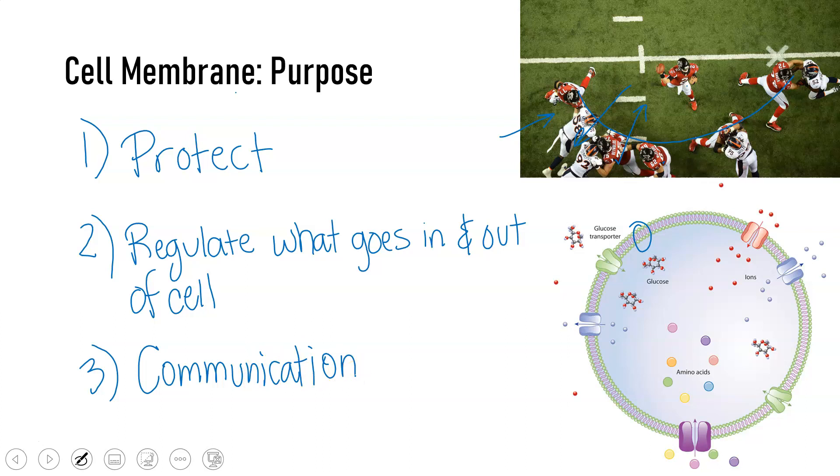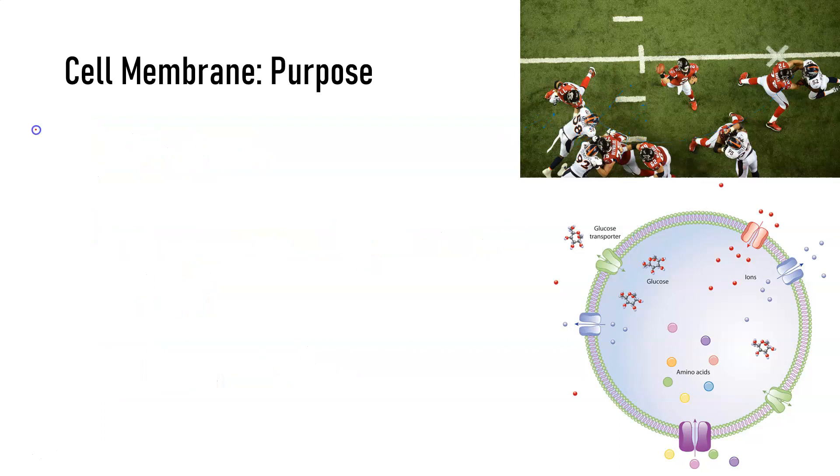Those are the three jobs of the cell membrane: protection, regulating what comes in and out, and communication. Because the cell membrane protects the cell, regulates what comes in and out, and communicates with the outside environment, it is key in maintaining homeostasis.